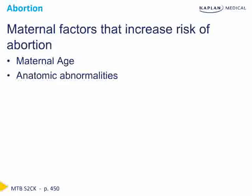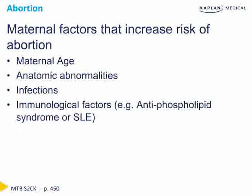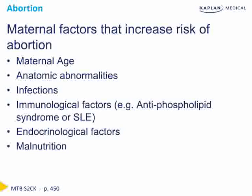In addition to the anatomic abnormalities discussed, there are other maternal risk factors which increase the risk of abortion. The infectious risks include HIV, syphilis, chlamydia trachomatis, and listeria monocytogenes, all of which have been associated with spontaneous abortion. There's also a possible role for mycoplasma hominis and ureaplasma urealyticum. There are also immunologic factors, endocrine factors such as uncontrolled thyroid disease resulting from thyroid autoantibodies or uncontrolled diabetes, as well as malnutrition and trauma.